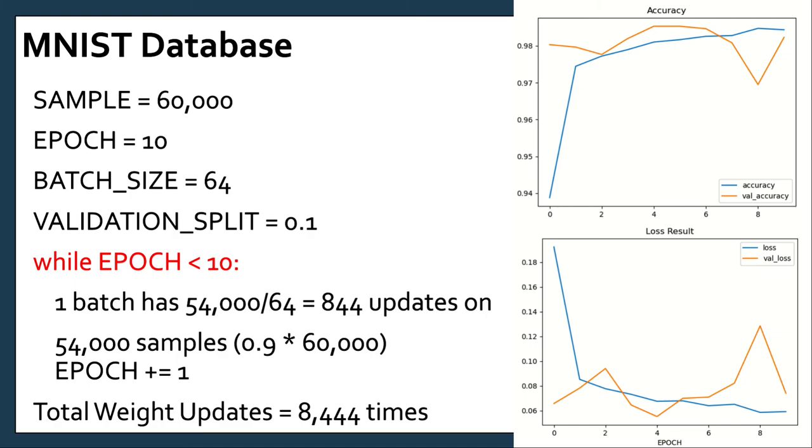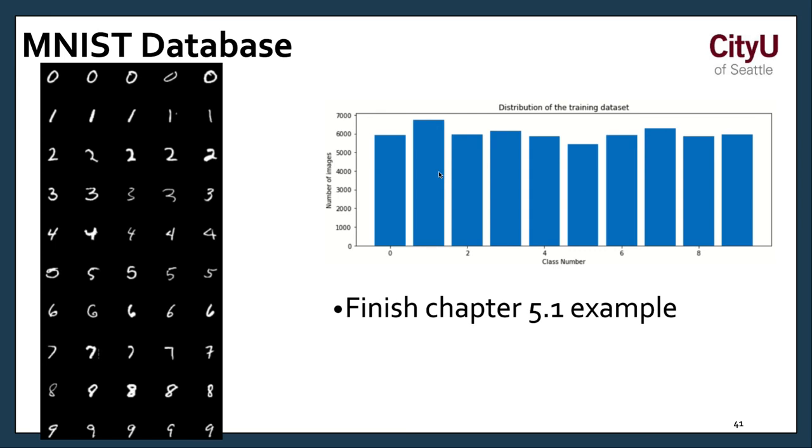We get to access the MNIST database. We can define a sample of 60K and epoch of 10, batch size of 64, with a validation split of 0.1. We can have this calculation and it would create this graphical representation for the accuracy and the loss results. You would see how many times the weight has been updated.